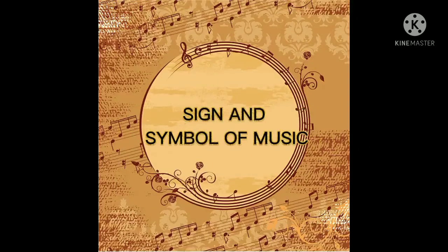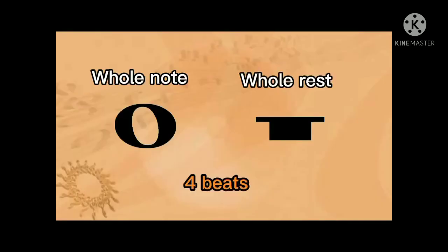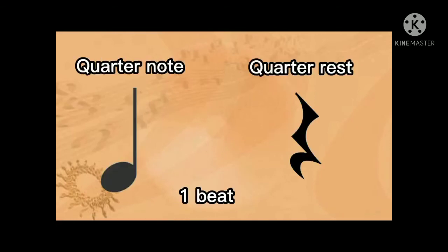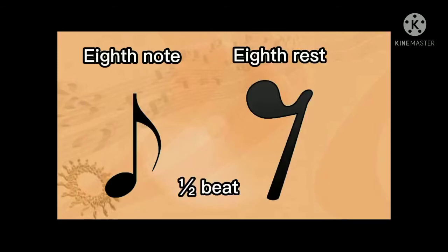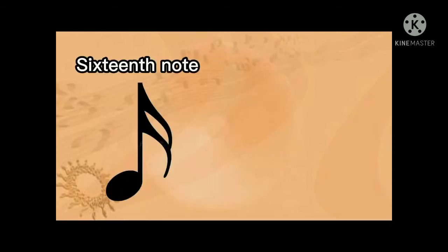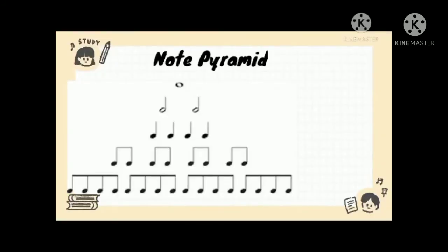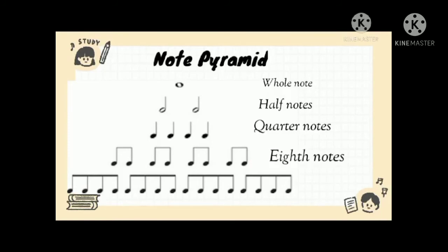The signs and symbols of music: whole note and whole rest have 4 beats; half note and half rest have 2 beats; quarter note and quarter rest have 1 beat; eighth note and eighth rest have half a beat; sixteenth note and sixteenth rest have one-fourth of a beat. These form the note pyramid: whole note, half notes, quarter notes, eighth notes, and sixteenth notes.